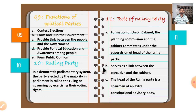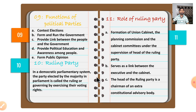Point nine is the functions of political parties. Key functions include: providing political education and awareness among the people, and forming public opinion — they must take and form public opinion rather than imposing their will like dictators.